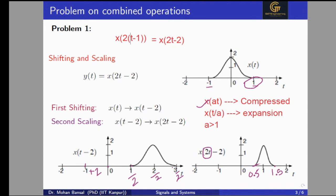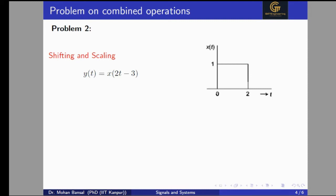Now we will see another problem: x(2t - 3). The same kind of signal is given, starting at zero and ending at two, and we have to apply the operation x(2t - 3). First we will apply the shifting operation by the amount of three. The same signal will start at zero plus three, and the endpoint two will go to two plus three. So after the shifting operation, the signal will start from three and end at five.